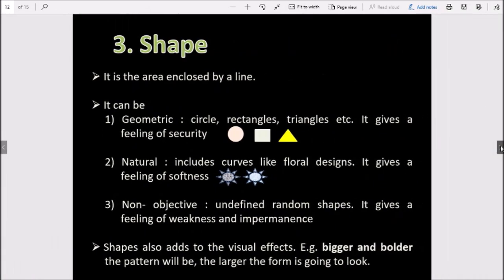Third element is shape. Shape is the area enclosed by a line. It can be geometric, like circles, rectangles, triangles in your dress designs - these give a feeling of security. Natural shapes like floral designs give a feeling of softness. Third is non-objective, which gives a feeling of weakness or impermanence.